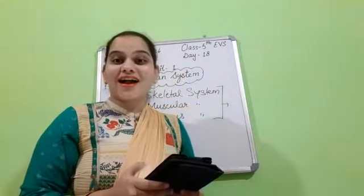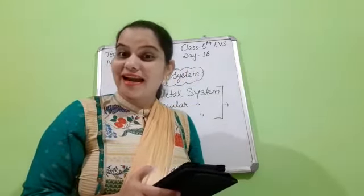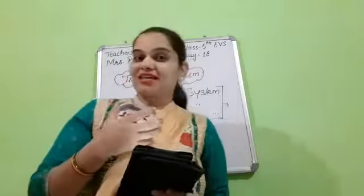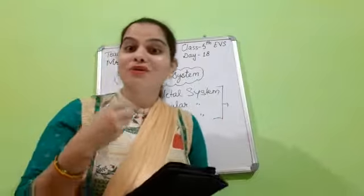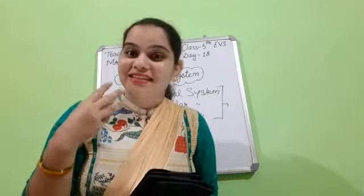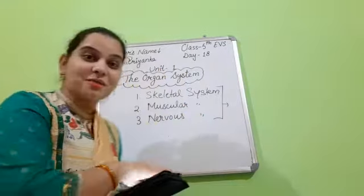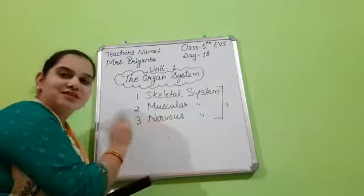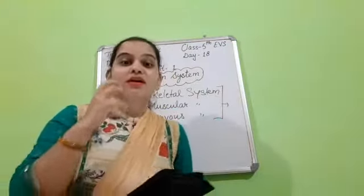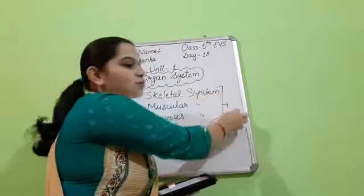Today we are going to start our Day 18 of Unit 1, and that is the organ system. In our previous classes we have studied about 3 systems — the skeletal system, muscular system, and nervous system. Today we will discuss about how these systems work together.